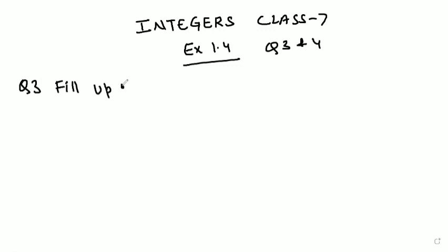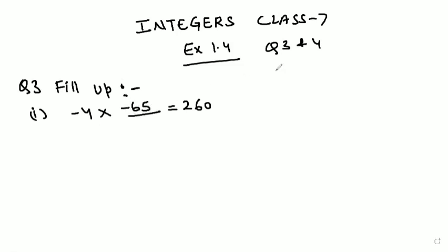Let's check out how to solve Question Number 3, which is fill in the blanks. In the first part: minus 4 should be multiplied by what so as to get 260? To find that, we divide 260 by minus 4, and the answer comes out as minus 65. So minus 4 into minus 65 equals 260. Doing the division: 260 divided by minus 4 gives minus 65.